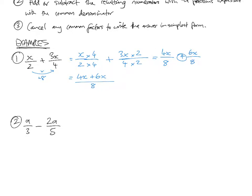Now that we decided 8ths were our pieces, we can add those numerators. 4x plus 6x is 10x over 8. And now, we can do the cancelling down.